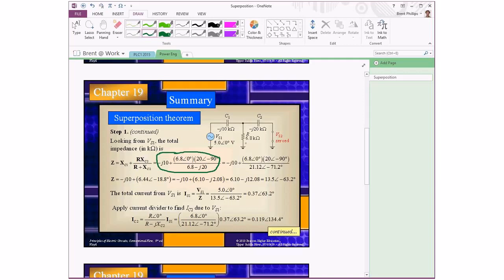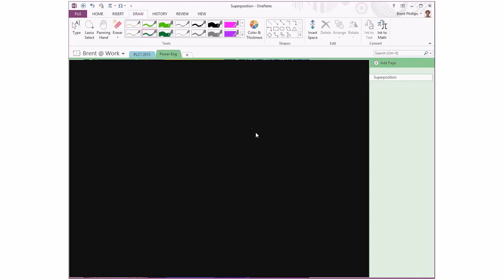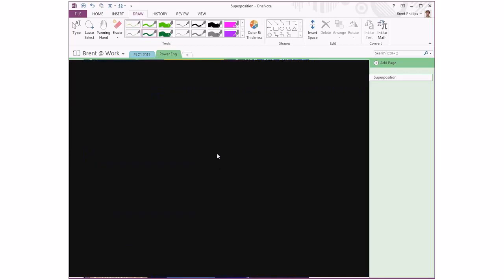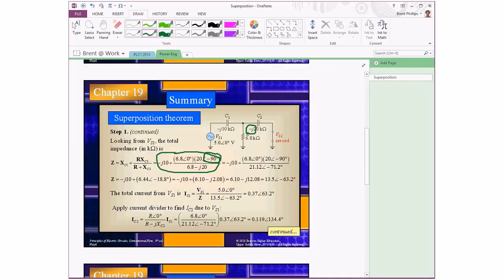One of the conversions they've done is using this minus J with the capacitor, and that's been converted to minus 90 degrees. That's something you'll get used to as you practice more. Minus J refers to minus 90 degree angle, and plus J refers to plus 90 degree angle.